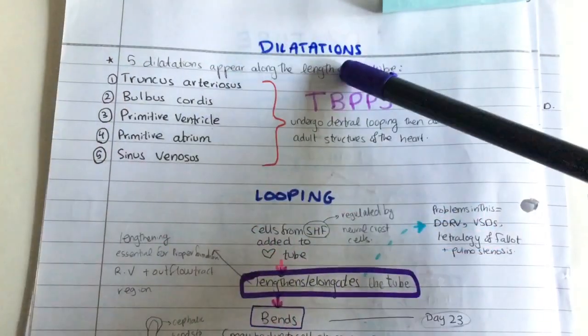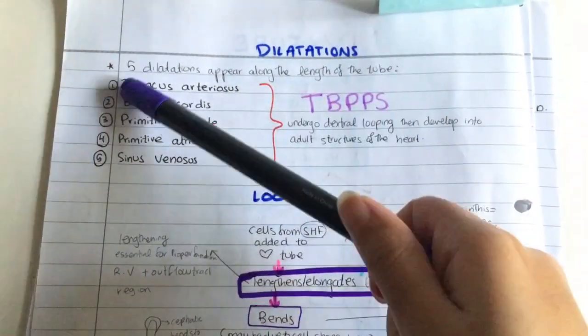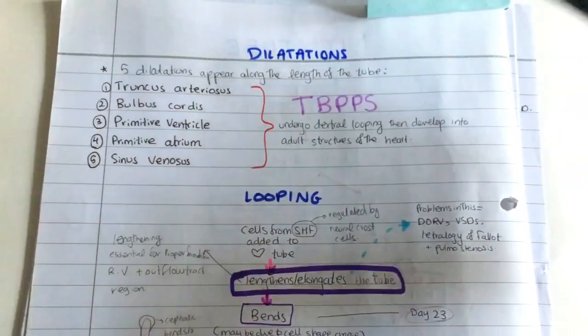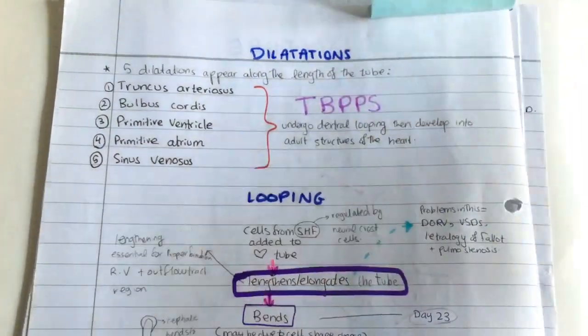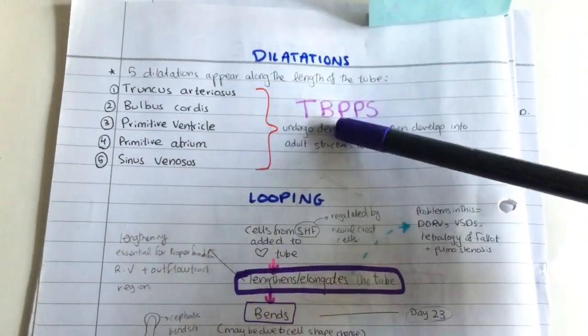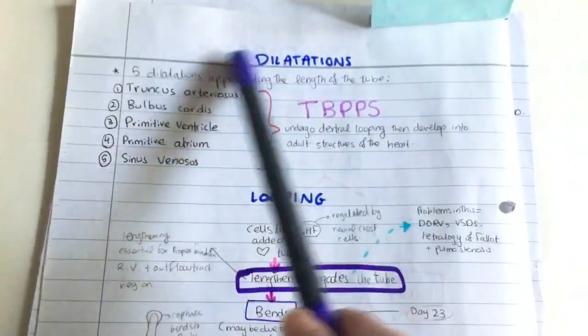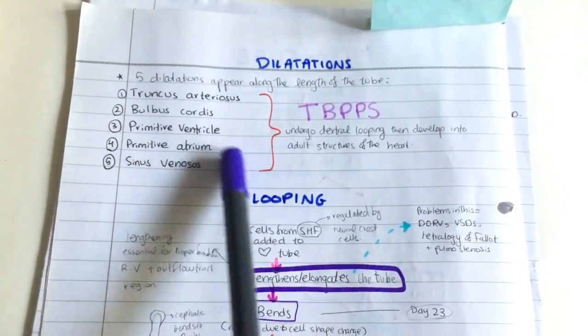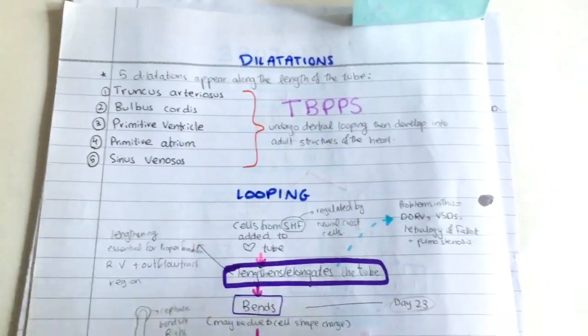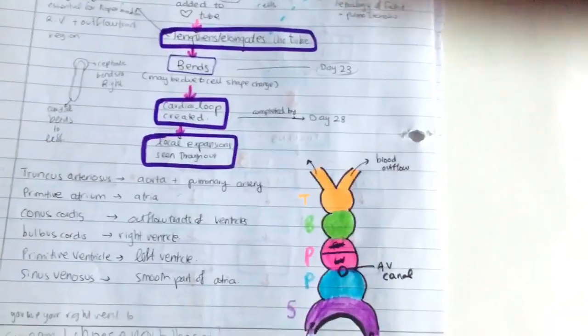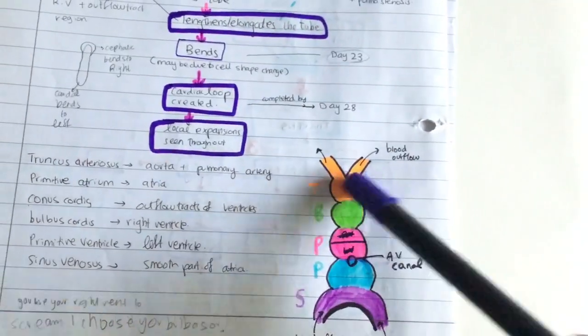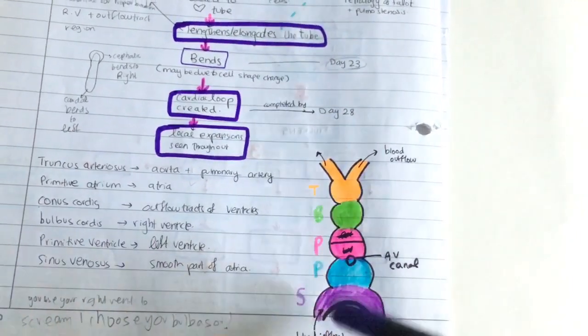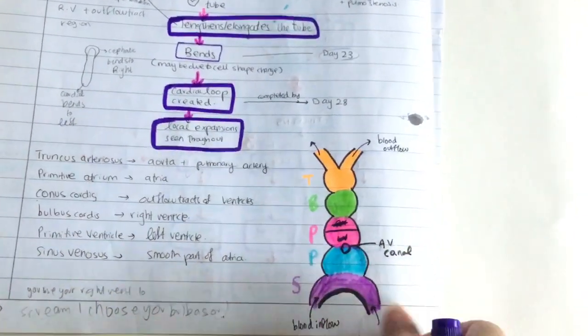Now we have dilatations happening. There are a total of five dilatations which appear along the length of the tube. The mnemonic is TBPPS: truncus arteriosus, bulbus cordis, primitive ventricle, primitive atrium, and sinus venosus. I have a drawing right here to show you it.